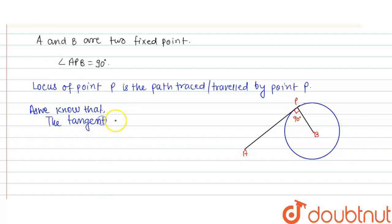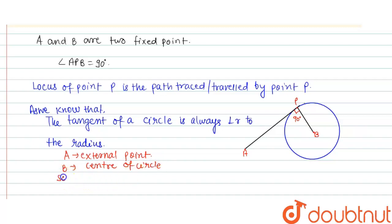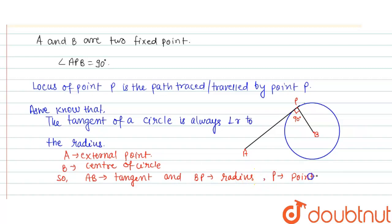As we know, the tangent of a circle is always perpendicular to the radius. So if we take A as an external point and B as the center of the circle, then AP will be the tangent, BP will be the radius, and P is the point of contact where the tangent and radius meet.